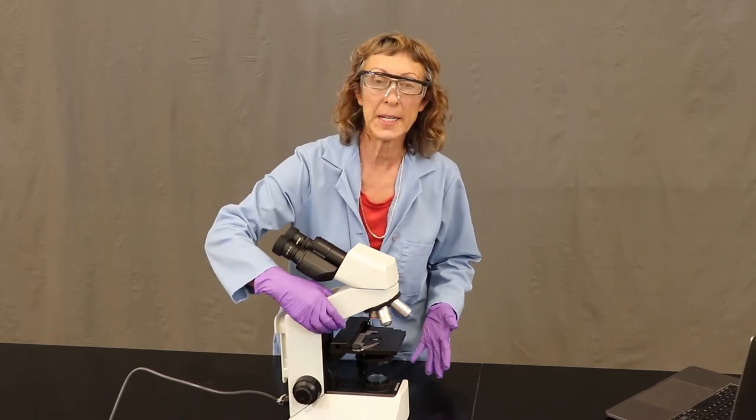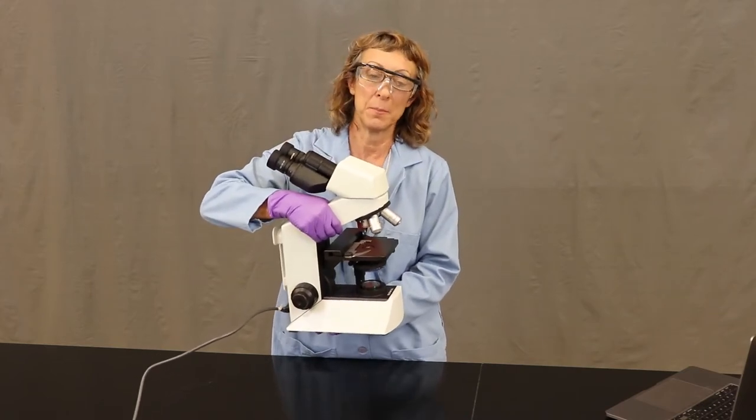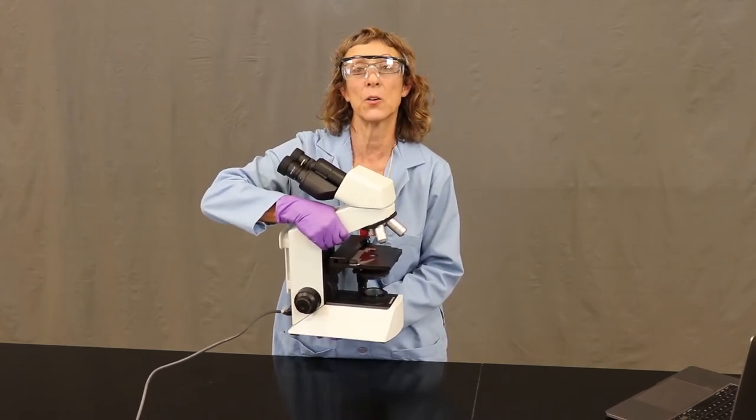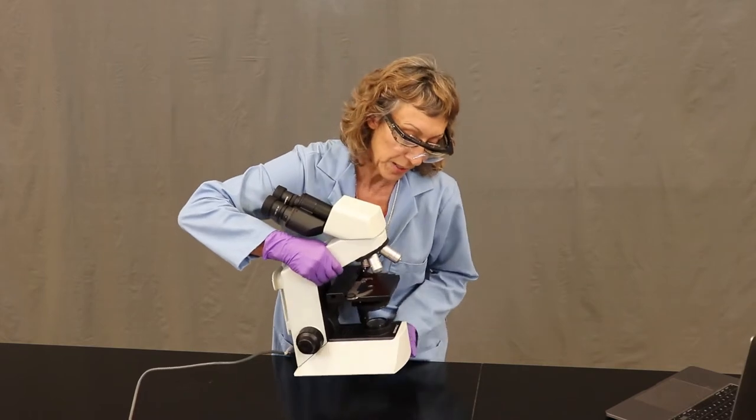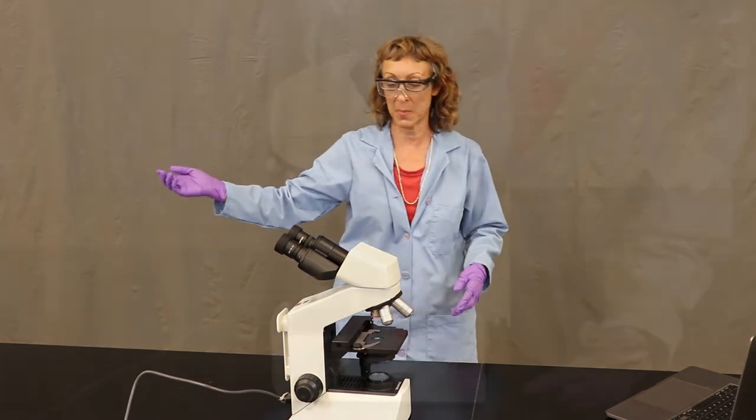And so when we carry a microscope, we always use a two-hand rule. One on the bottom and one in a good place to grab so that it's well supported and you're not likely to swing it around and bang into something.